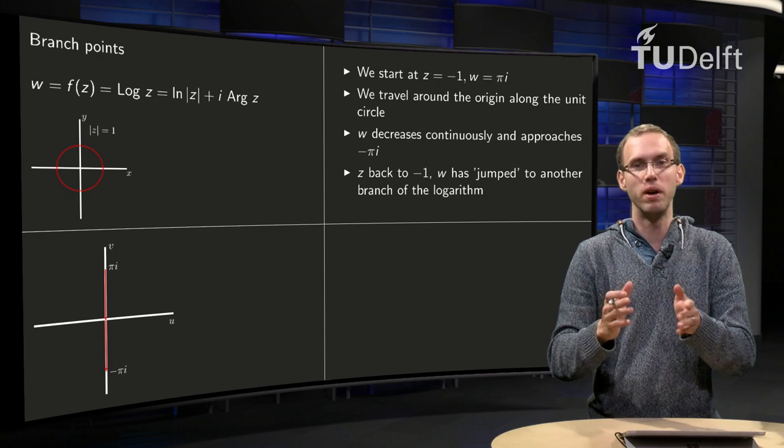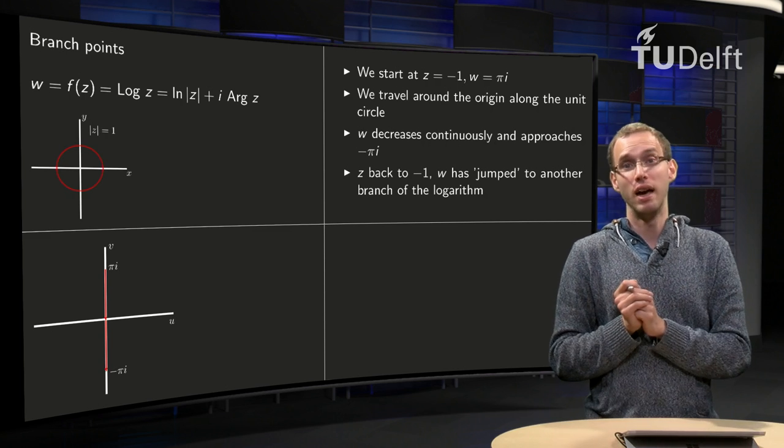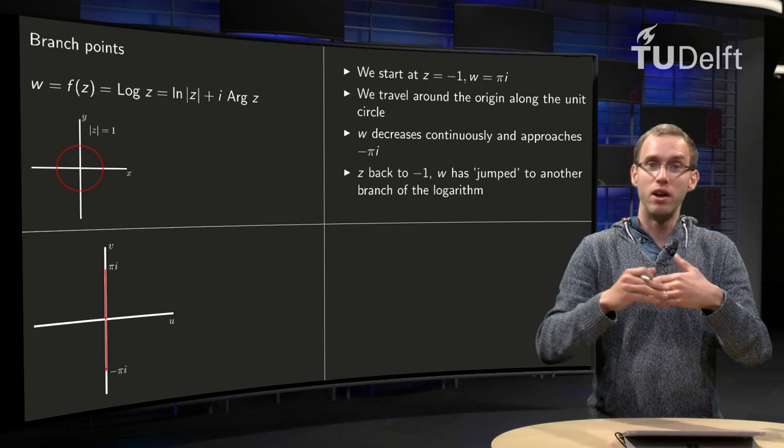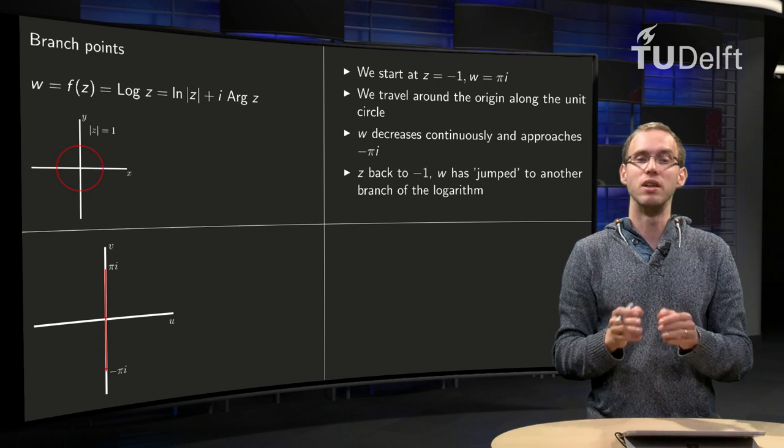If you have a small step in the domain, you want a small step in the codomain. That's not happening if you are allowed to make a travel like this around the origin.